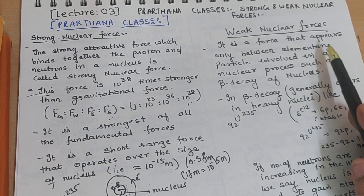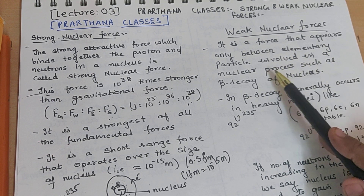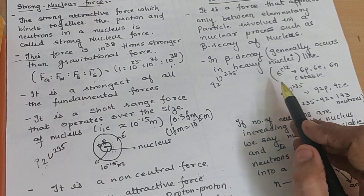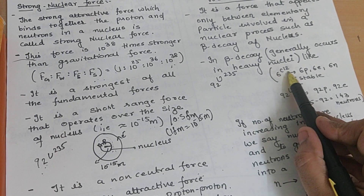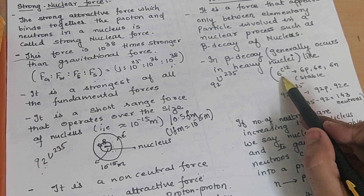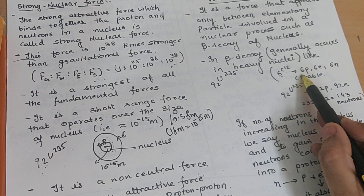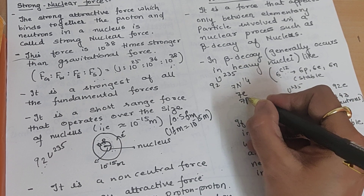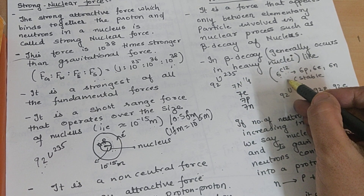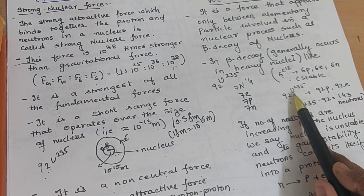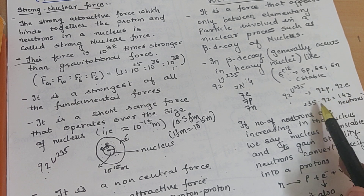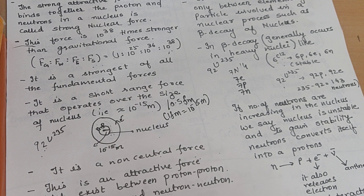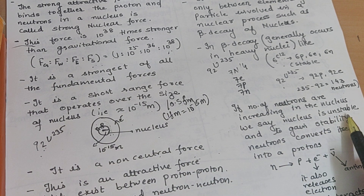Now we come to the weak nuclear forces. Generally, this force appears only between elementary particles involved in nuclear processes such as beta decay. Beta decay — for example, Carbon-6C-12: you know carbon has 6 protons, 6 electrons, and 6 neutrons. Lighter nuclei like Carbon-12 or Nitrogen-7N-14 have equal protons, electrons, and neutrons, so they are stable. But in heavy nuclei like Uranium-235, there are 92 protons, 92 electrons, and 143 neutrons.